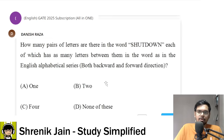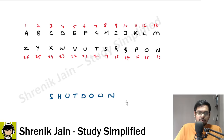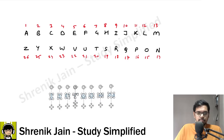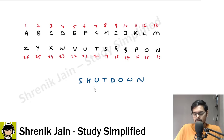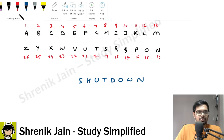Whenever a coding, decoding, or logical reasoning question comes, I have always told you to make that diagram. This is the diagram which I recommend. You have to just write the word 'shutdown' and then find the pairs — pairs such that the letters between them in this word and in the English alphabetical series remain the same, both in backward and forward direction. Very simple question, not that tough. Let us go one by one.